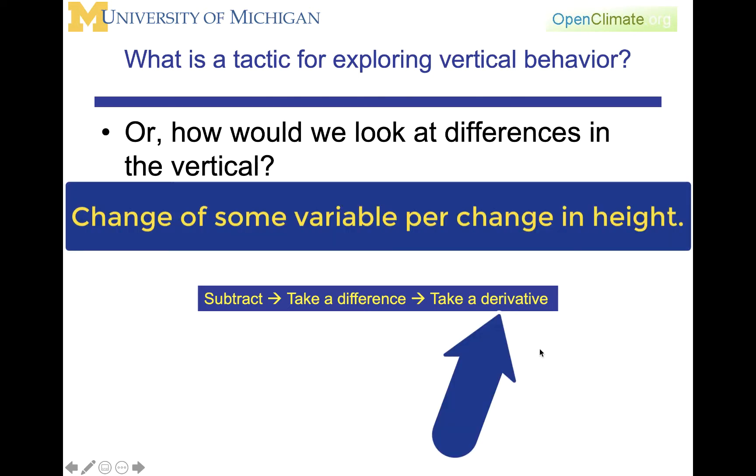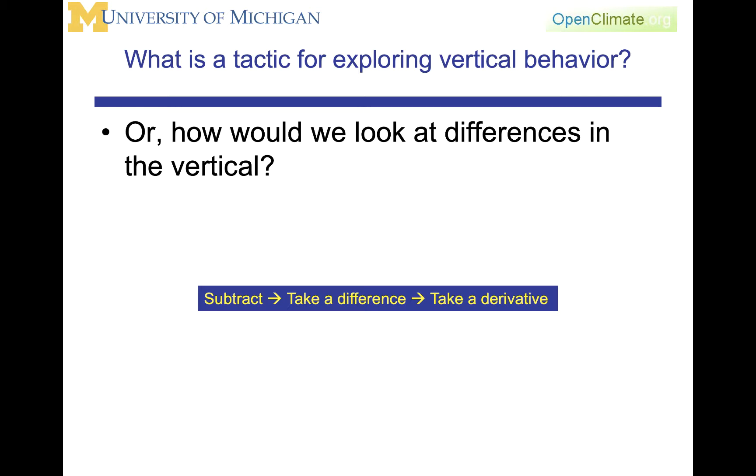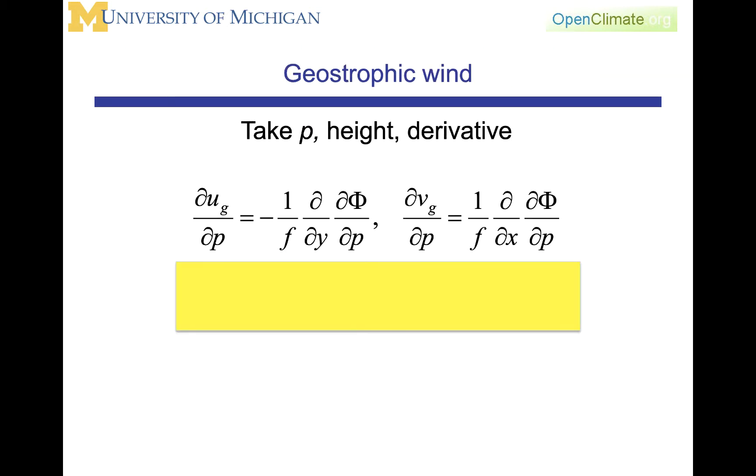Therefore, what we're going to do is take a vertical derivative of the geostrophic wind. That's what's represented here, where we've taken the u term and the v term. We are using pressure as our height coordinate, and therefore we're going to take the partial of u with respect to p and the partial of v with respect to p.